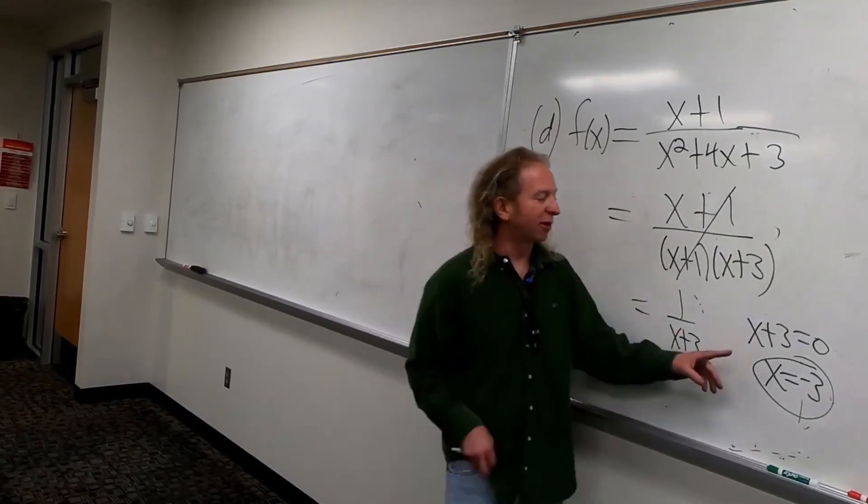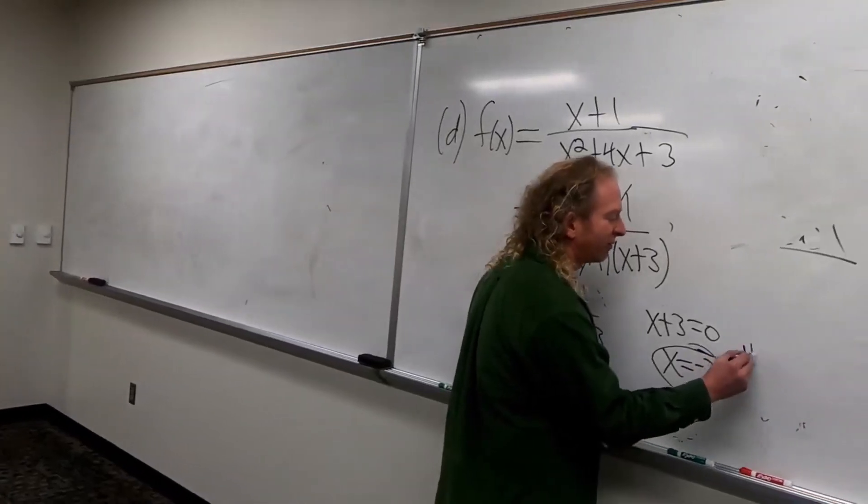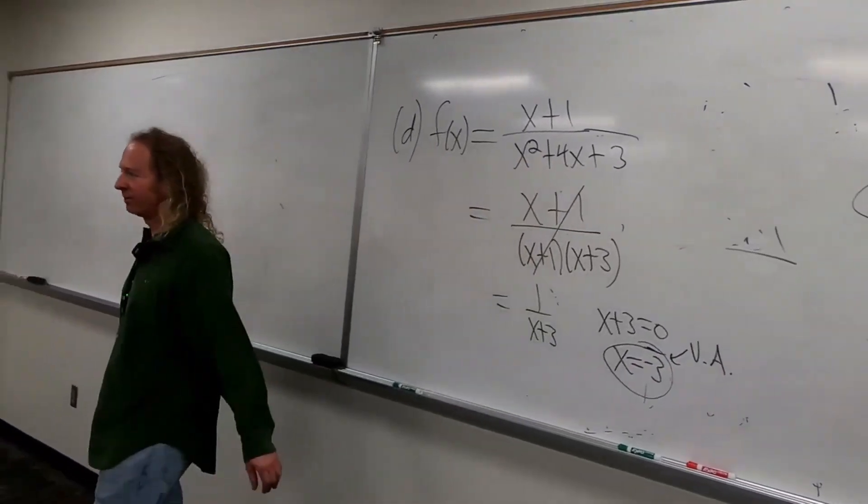No, we're saying that the vertical asymptote is X equals negative 3. Okay. Good question.